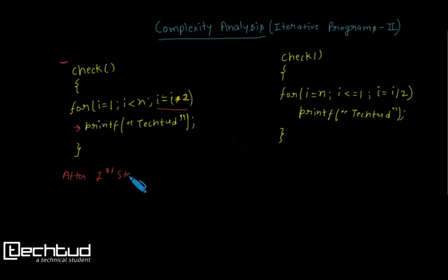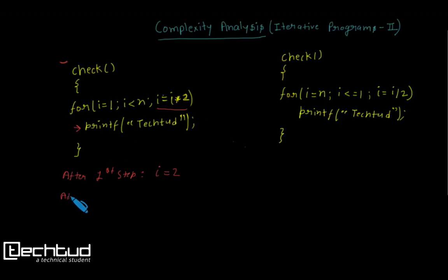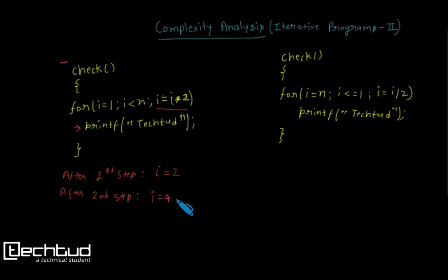After the first step the value of i is 2, because initially i is 1 — it executes once and then i becomes 2. After the second step, when i is 2, printf executes and i becomes 4, which is 2 squared.